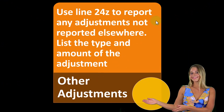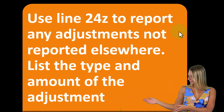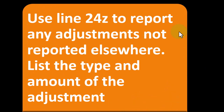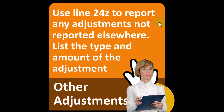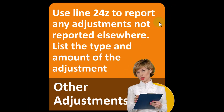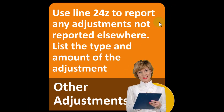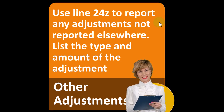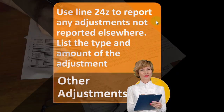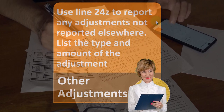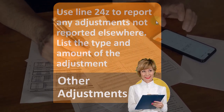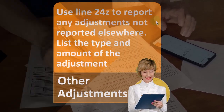For other adjustments, use line 24Z to report any adjustments not reported elsewhere — list the type and amount of the adjustment. So if there are any other kinds of adjustments in that category, those go into the other adjustments section on Schedule 1. Next time we'll take a look at plugging this into the tax software, which might wrap our heads around this a little more clearly.